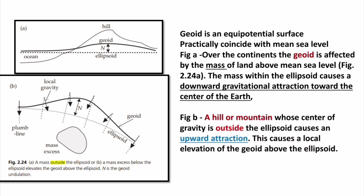In the case of a hill or mountain, because it is at a height it is going away from the center of Earth. So what happens is that within the ellipsoid there will be an upward attraction as compared to the downward attraction which was acting earlier. This causes a local elevation of the geoid above the ellipsoid — there will be a height difference between the geoid and the ellipsoid.